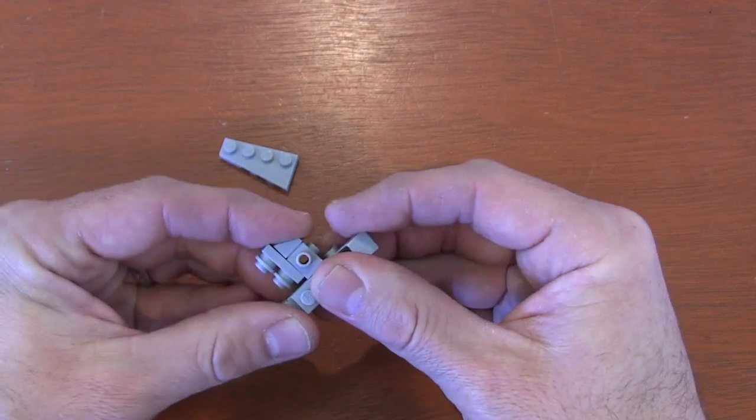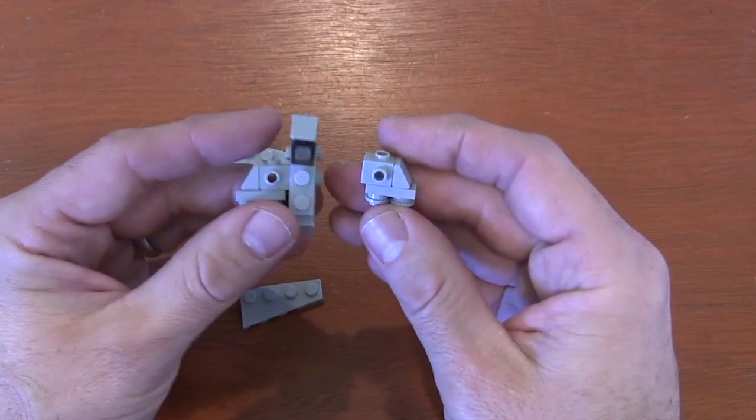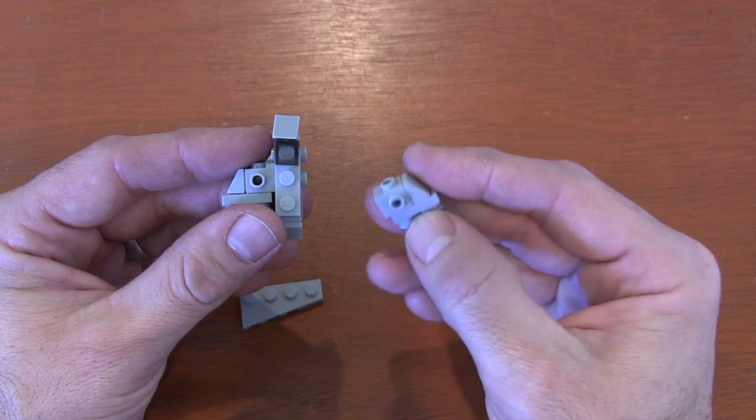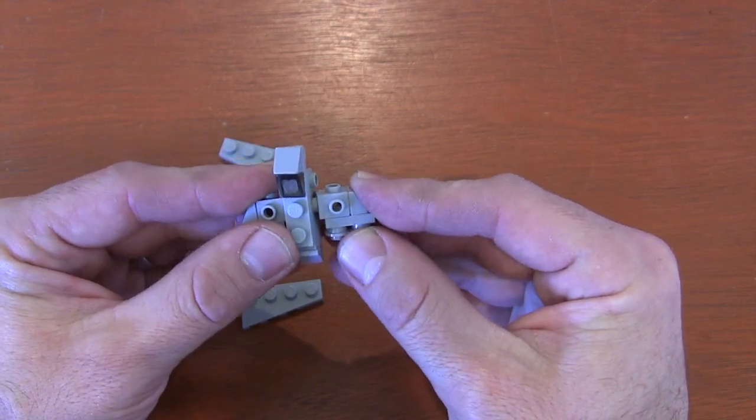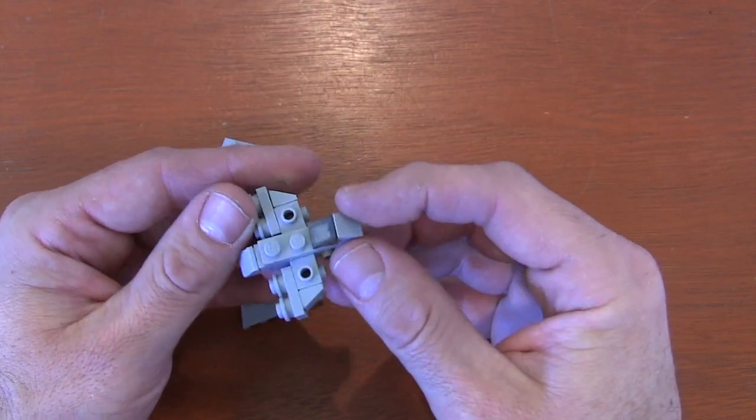We'll do that a second time, but I've already assembled it to save time. Put the big end of the slope on the front stud to form the wings.